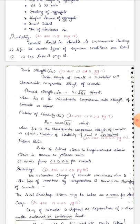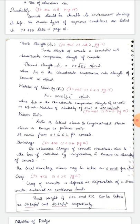Tensile strength of concrete is correlated with the characteristic compressive strength. The flexural strength fcr is equal to 0.7 times the square root of fck, in units of N/mm². The modulus of elasticity is 5000 times the square root of fck, where fck is the compressive strength of concrete.